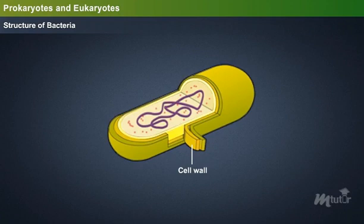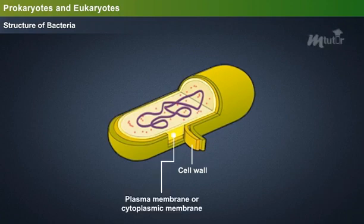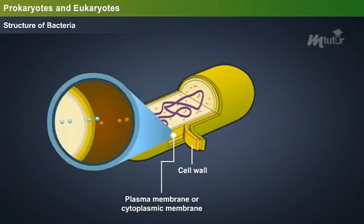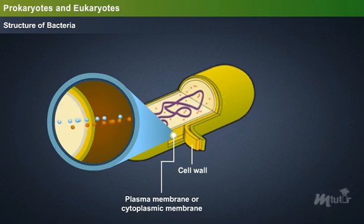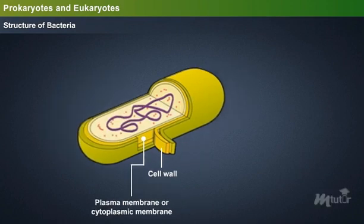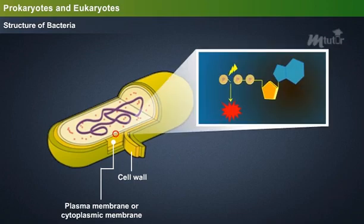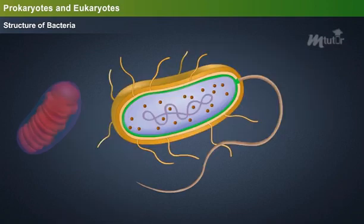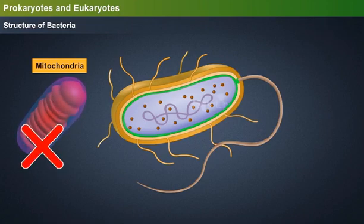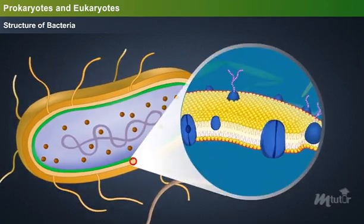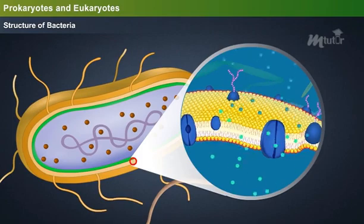The layer next to the cell wall is the plasma membrane or cytoplasmic membrane. It acts as a permeable membrane, allowing certain molecules to move in and out through the mechanisms of diffusion or active and passive transfer. Several metabolic processes occur in this plasma membrane. Since mitochondria is absent in prokaryotes, the enzymes for respiration and the electron transport system are present in the cytoplasmic membrane, through which respiration occurs.